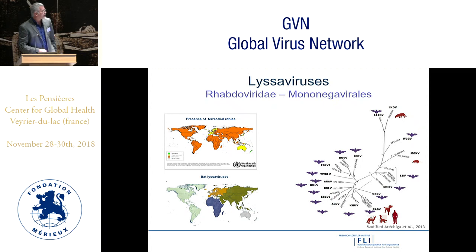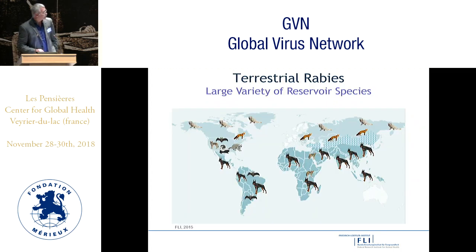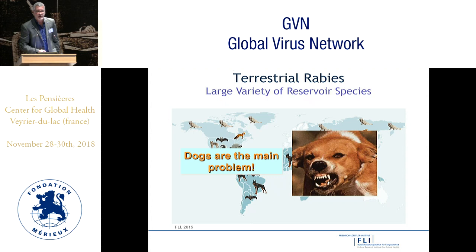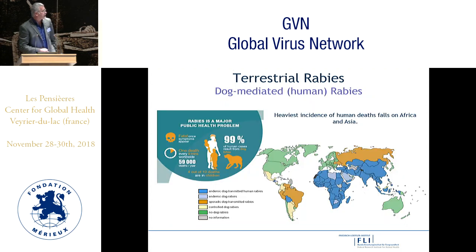The classical rabies virus is spread in a variety of animals across the world. The great majority of the remaining Lyssaviruses exclusively occur in bats and therefore have a narrow geographic and host range distribution. If we talk about terrestrial rabies caused by the classical rabies virus, we are confronted with a large variety of reservoir species. Apart from bats in the Americas, reservoir species exclusively reside in the order Carnivora, and dogs are the main problem. Dog-mediated rabies is a major public health problem.